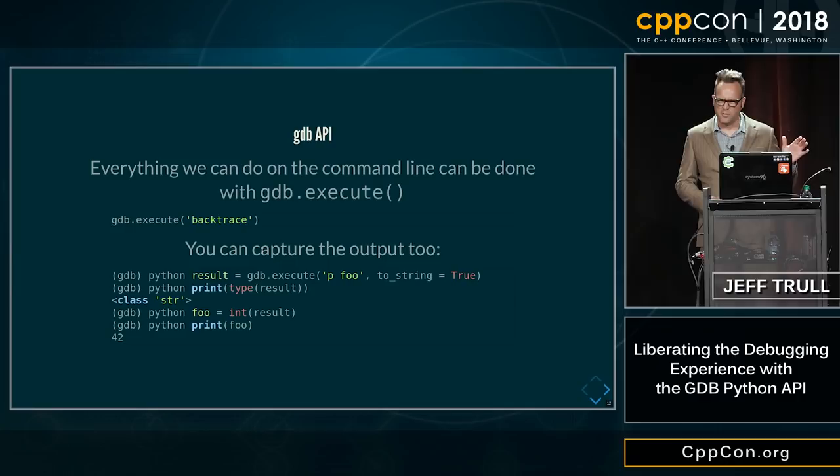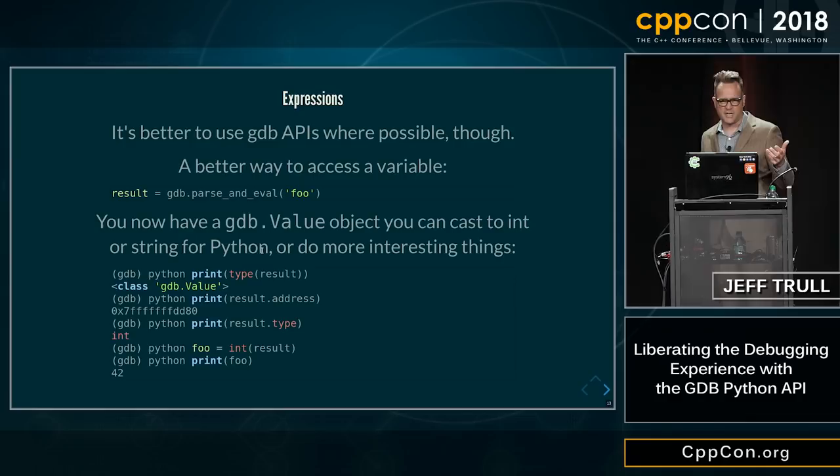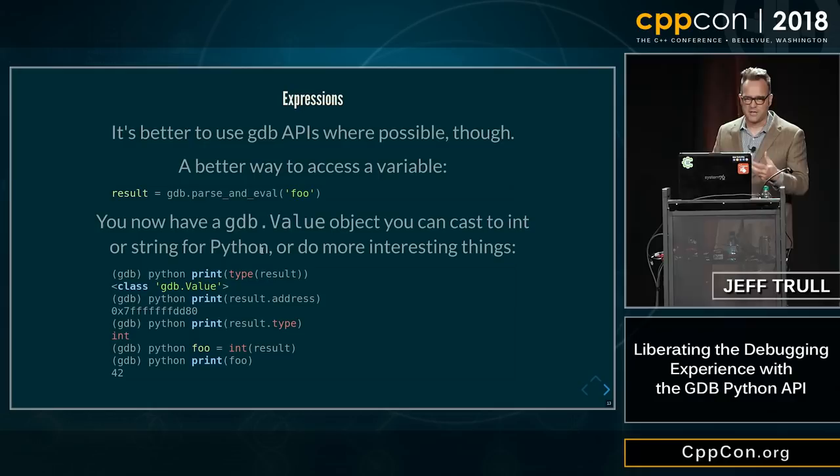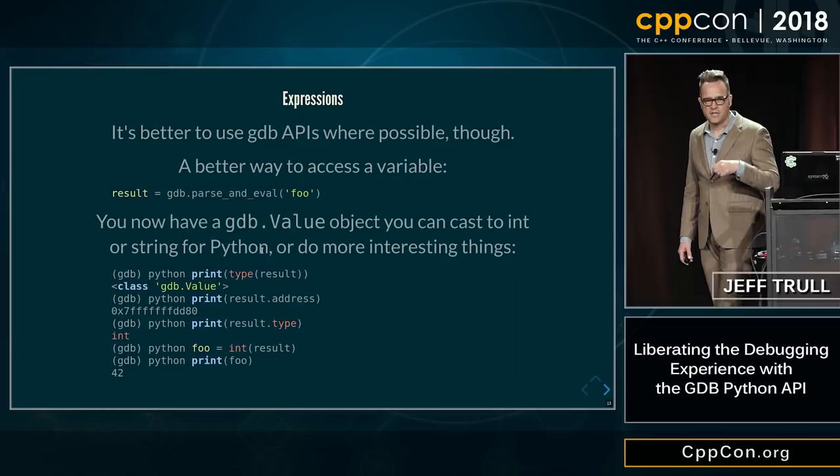That's one way to interact with the API, but it's not really the best way. A better way is to use the richer stuff in the API that gives you objects back with methods. For example, the gdb.parse_and_eval method — if you supply an expression, it gives you something called a GDB value back, and you can do things like get the address of the value or the type of the value. You can convert it to a plain Python type as well.